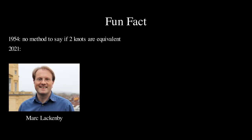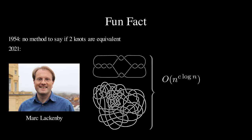that determines whether a knot is the unknot in n to the power of c log n steps for some constant c, which is known as quasi-polynomial time. For example, these two tangled diagrams are both actually the unknot.